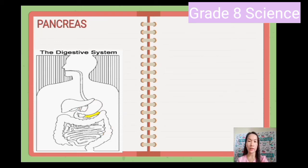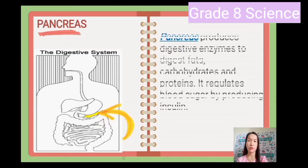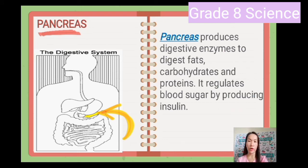Next is the pancreas. The pancreas produces digestive enzymes to digest fats, carbohydrates, and proteins. It also regulates blood sugar by producing insulin.